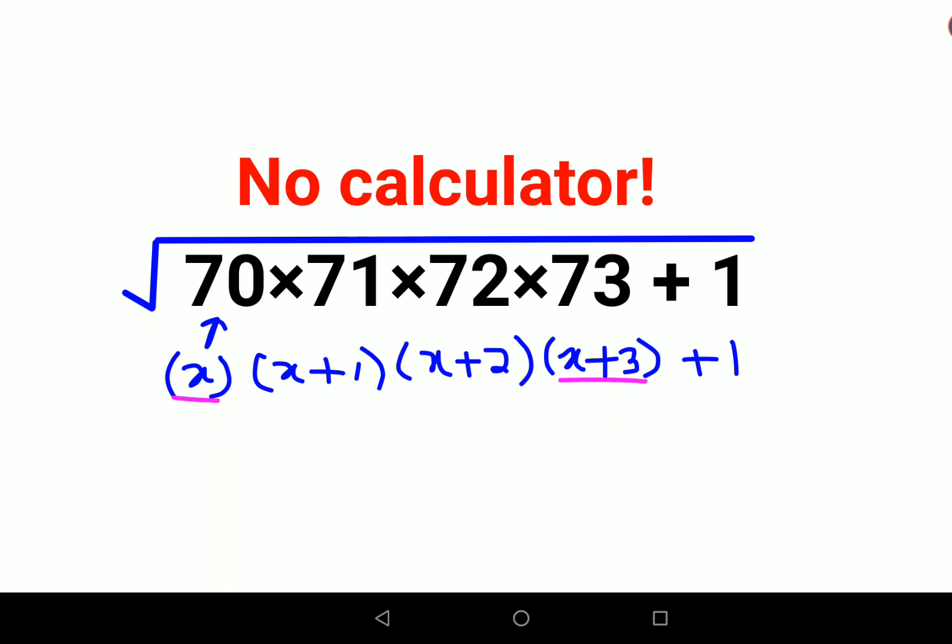When you multiply X and X plus 3, you get X squared plus 3X. And similarly, when you multiply these two, I am left with X squared plus 3X plus 2, and this plus 1 remains as it is.